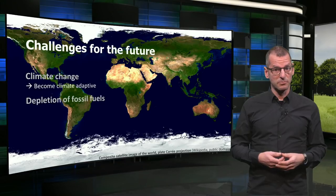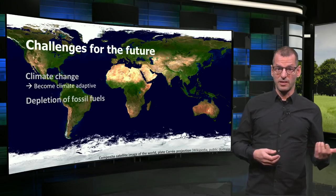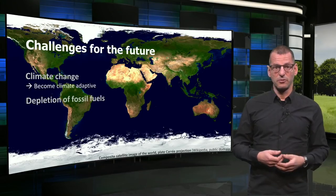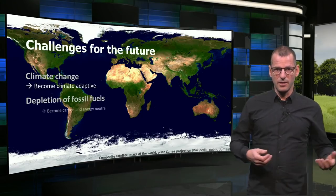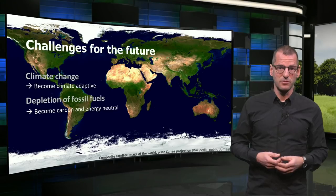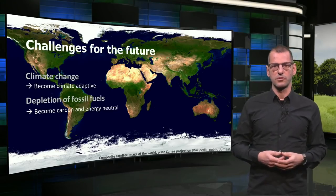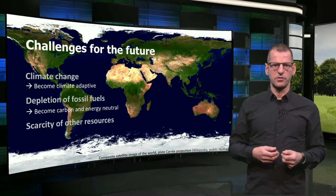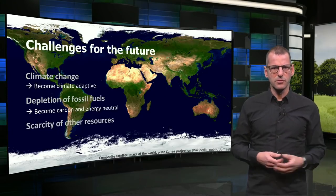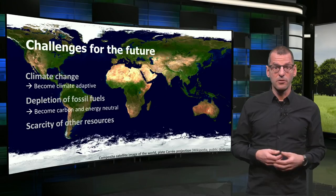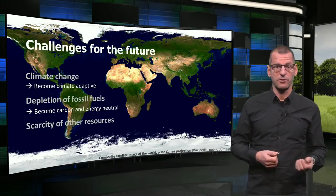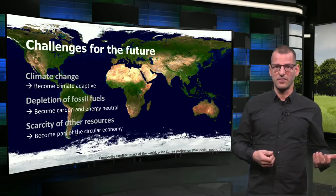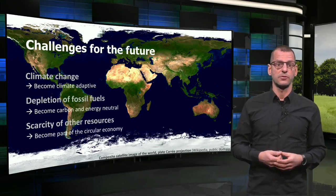Depletion of fossil fuels is a challenge. Perhaps we can postpone the end of the fossil era another human life, but there will be an end to it anyway. And if we want to avoid extreme climate events, we have to switch to clean renewables completely. Scarcity of other resources is also an issue. Many resources are depleting, such as rare earth metals required for electronics, batteries and renewable energy devices. The only way to solve this is to become entirely circular in our material use.